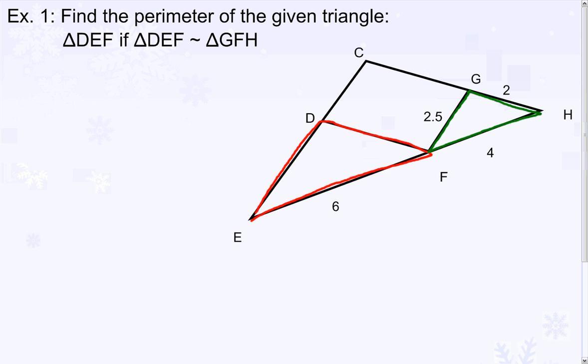We can use the similarity ratios of matching segments. In this case, segment EF corresponds to FH by our similarity statement, which is 6 over 4, or 3 halves. Therefore, the scale factor between these two similar triangles is 3 halves.